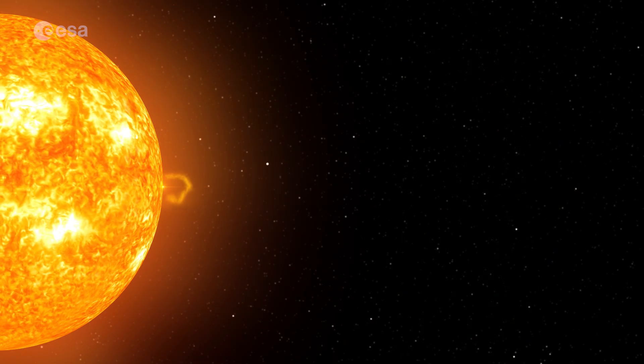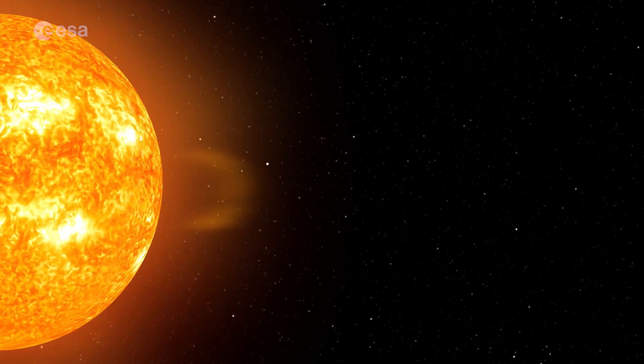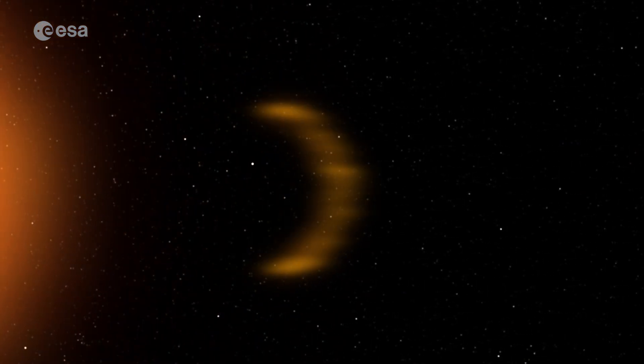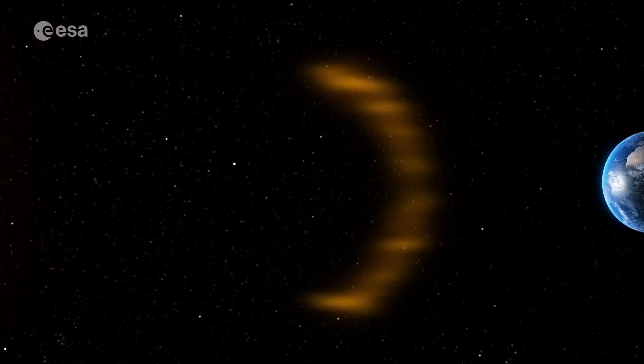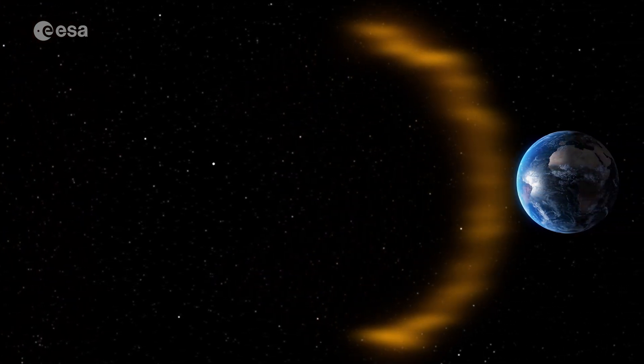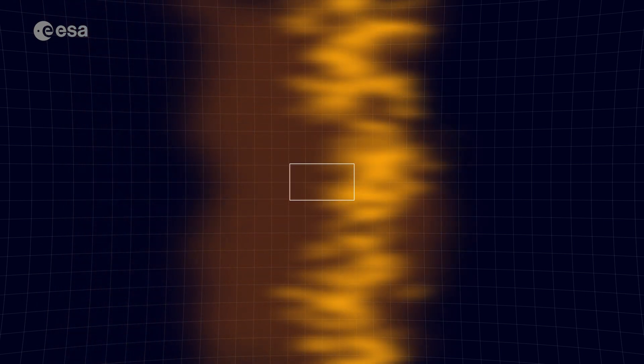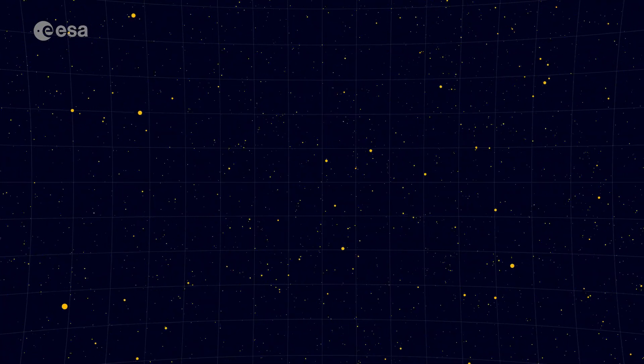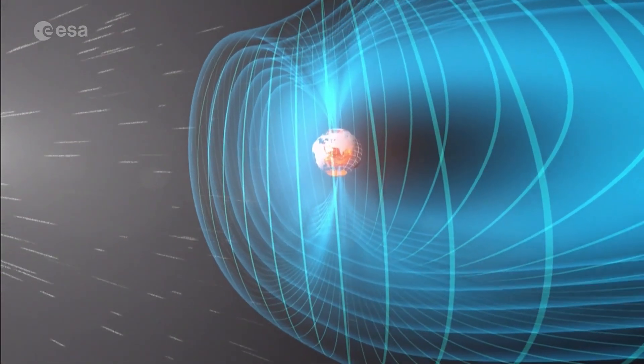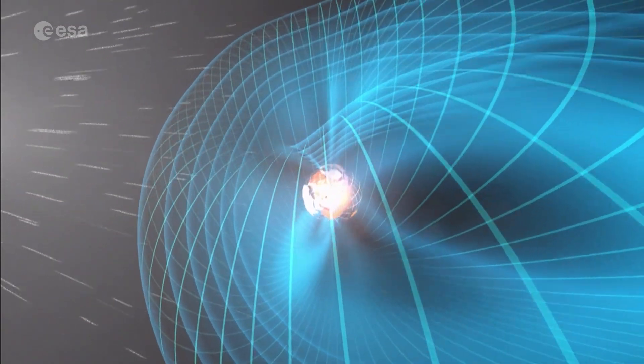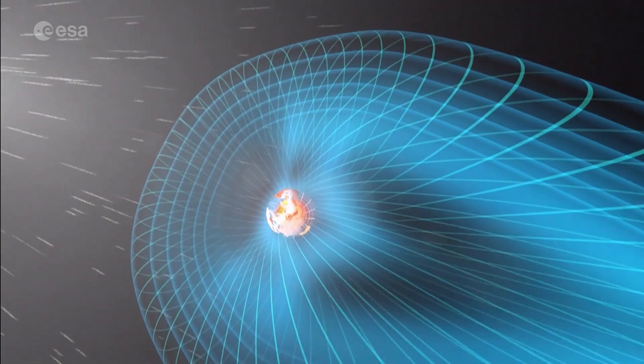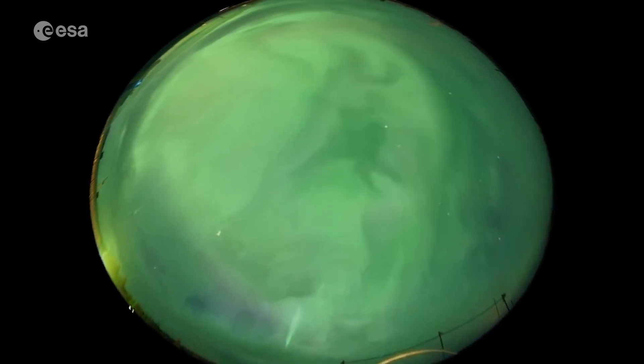Coronal mass ejections are giant explosions that shoot billions of tons of plasma from the Sun in magnetic clouds that dash through space at up to 3,000 kilometers per second. Processes associated with solar flares and coronal mass ejections can also accelerate particles in the solar wind to near light speeds. Sometimes, this high-energy matter, radiation and plasma is directed at Earth and arrives with an almighty bang.